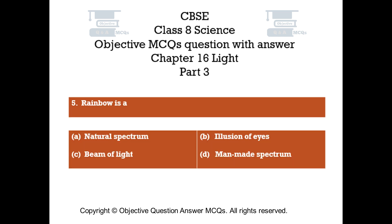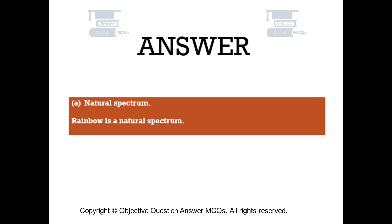Question number 5: Rainbow is — Option A: Natural spectrum, Option B: Illusion of eyes, Option C: Beam of light, Option D: Man-made spectrum. The right answer is Option A: Natural spectrum. Rainbow is a natural spectrum.